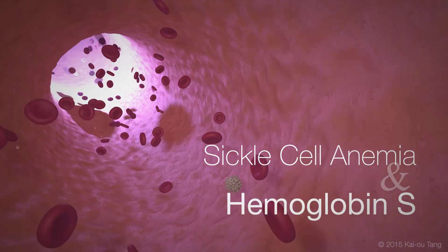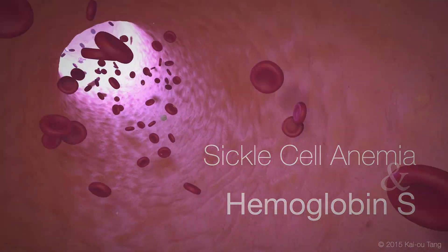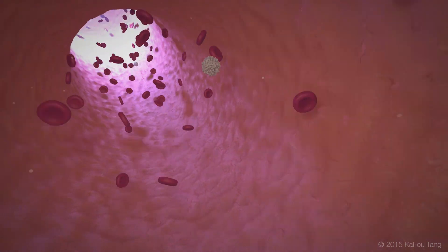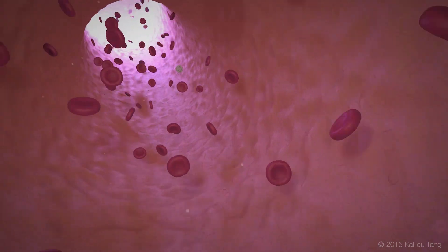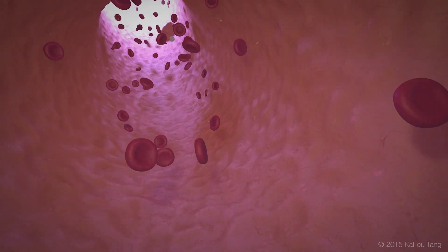Sickle Cell Anemia and Hemoglobin S. Erythrocytes, or red blood cells, are the human body's means of delivering oxygen to various tissues and organ systems.